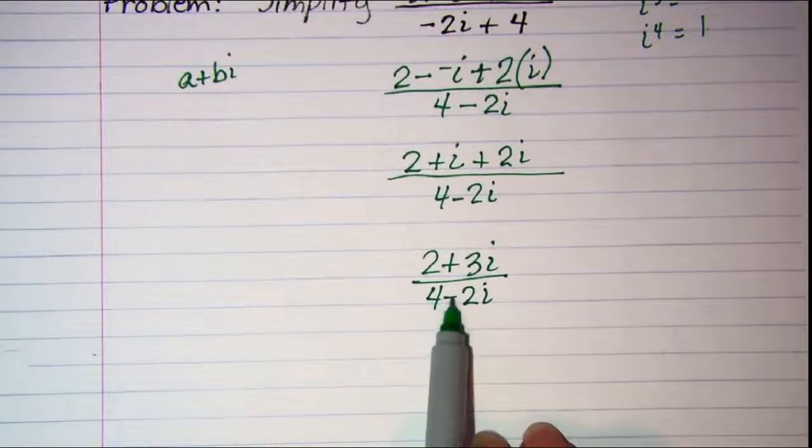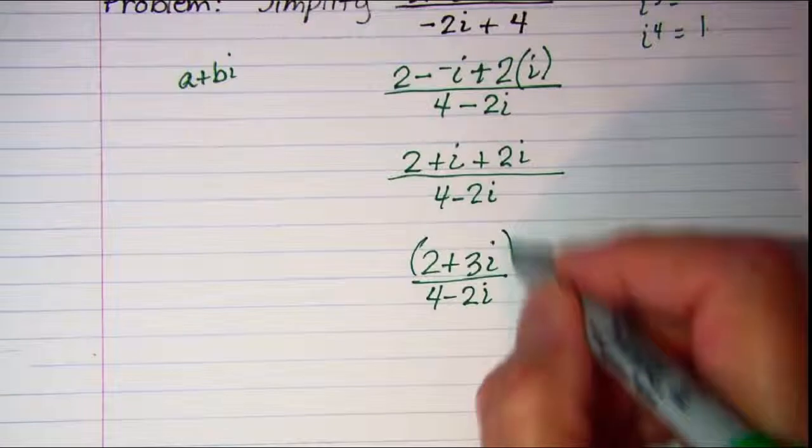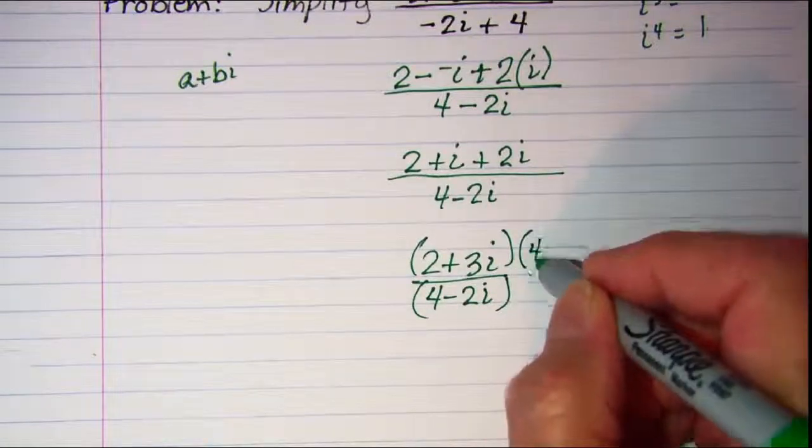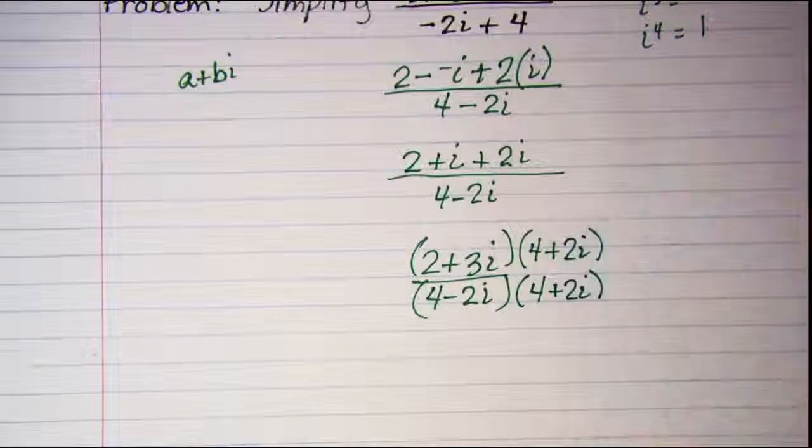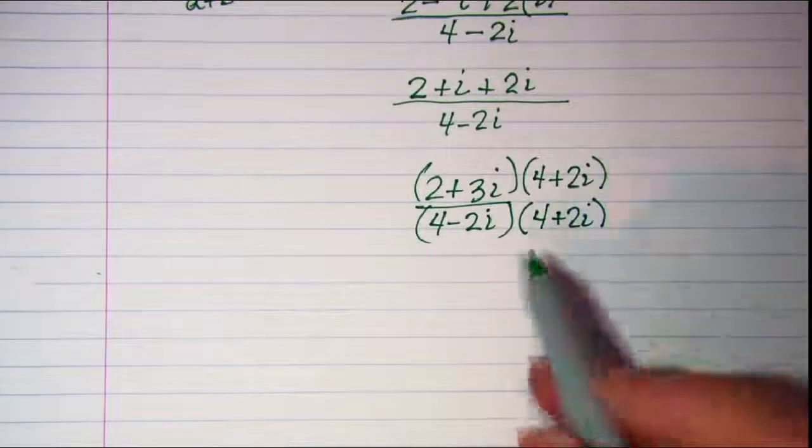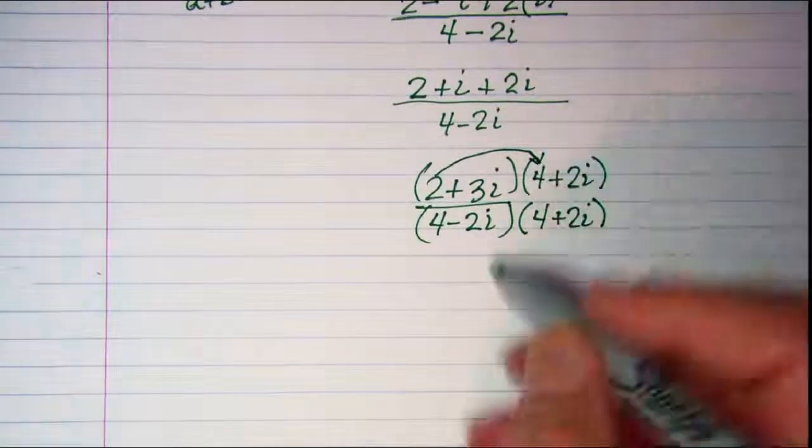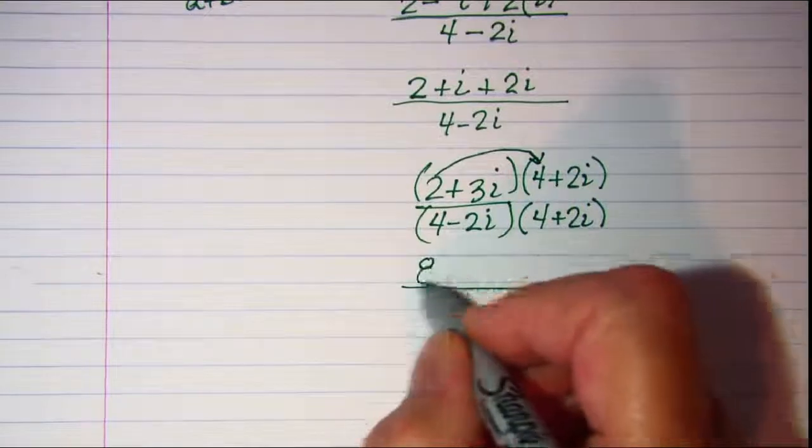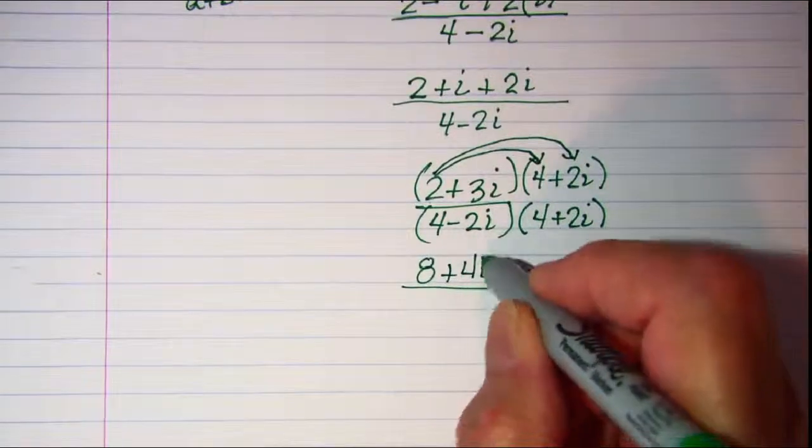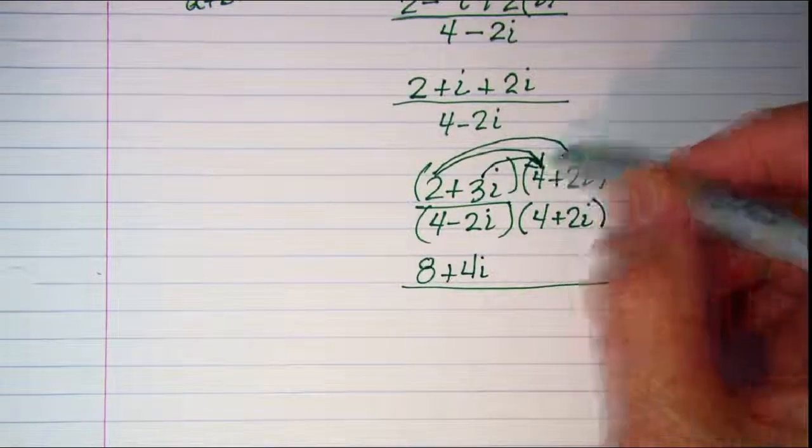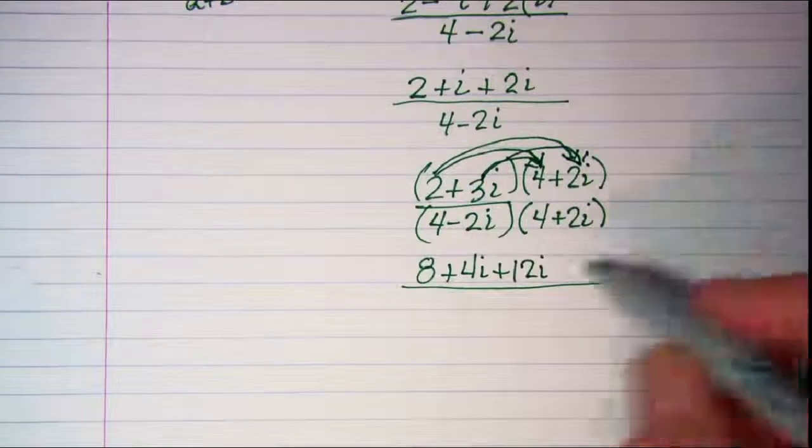The conjugate of this binomial is 4 plus 2i. So I'll multiply top and bottom by 4 plus 2i. We'll just use our FOIL on both of these. The numerator I have 2 times 4 is 8. 2 times 2i is 4i and then 3i times 4 is 12i and then 3i times 2i is 6i squared.